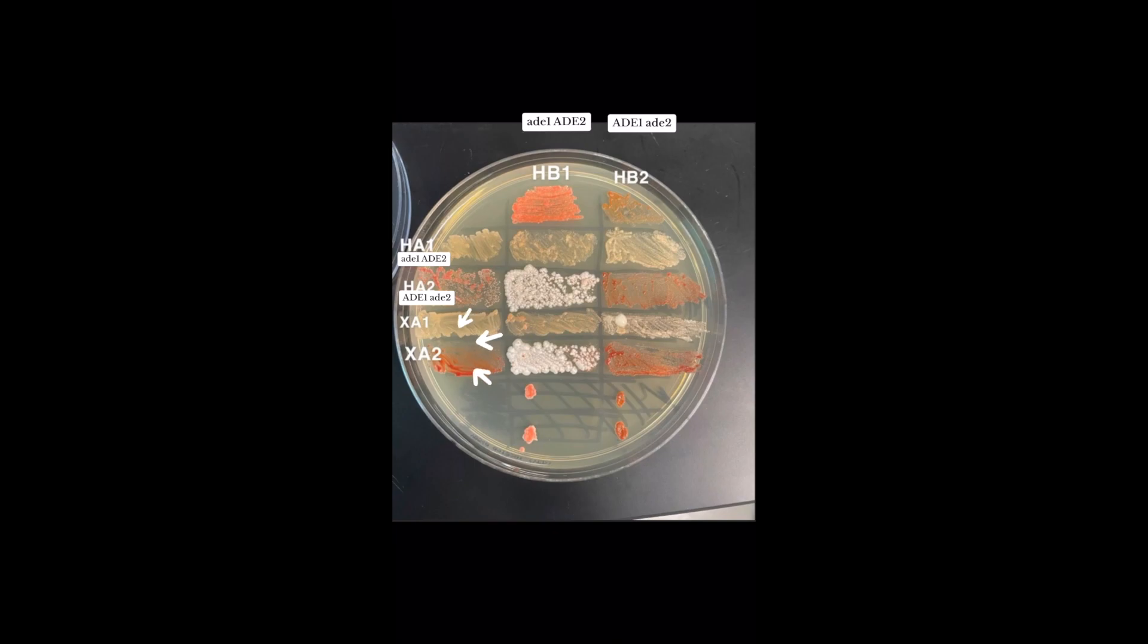Now let's take a look at the tester strains Xa1 and Xa2. The Hb1 Xa1 cross resulted in a red phenotype, which means that they failed to complement and are on the same gene. The Hb2 Xa2 cross had the same phenotypic result. The Hb1 Xa2 cross resulted in a white phenotype, so they do complement each other and are on different genes. The Hb2 Xa1 cross had the same phenotypic result.